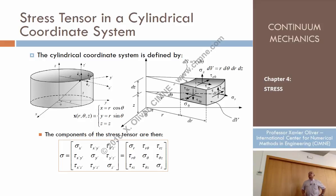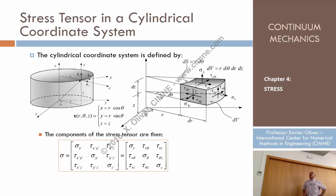The tangential stresses are called tau x-prime y and tau x-prime z. The first index indicates the plane in which they act — r is tangential to the plane orthogonal to the r direction. So tau r-theta is positive. What is the positive sense of tau r-theta here?